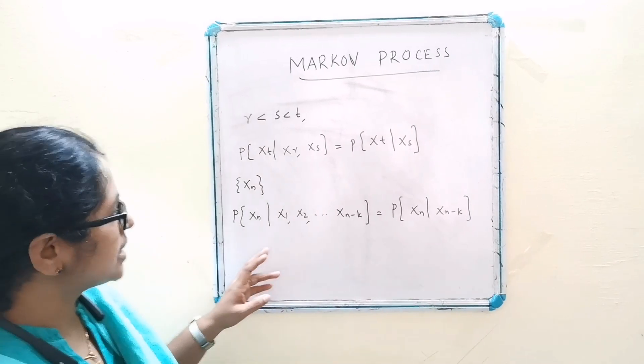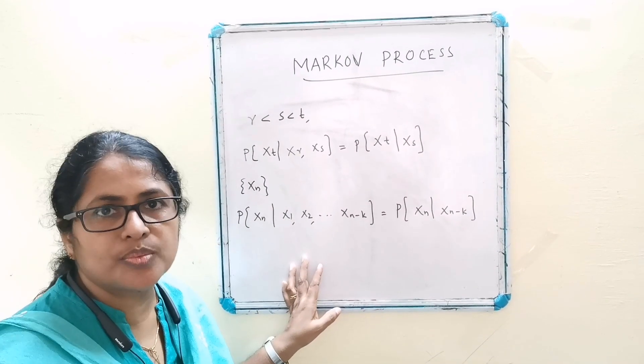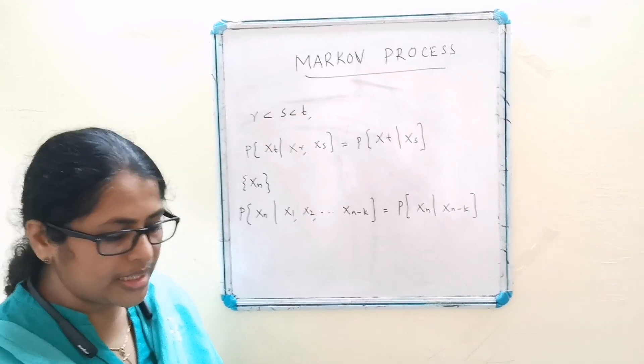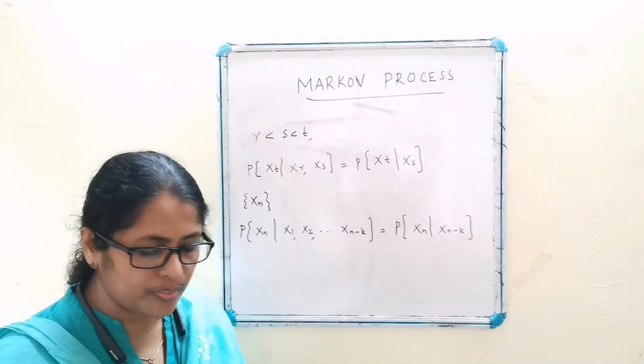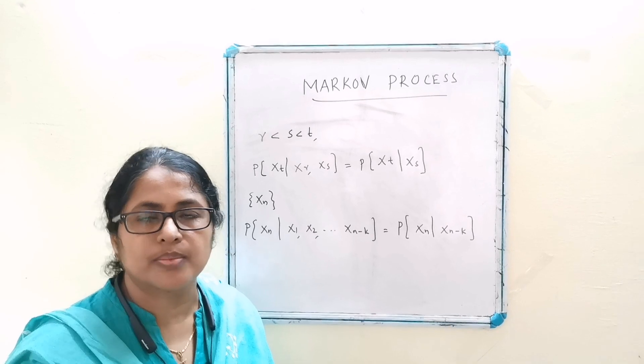When the order is not specified, it is assumed that k is equal to 1. A stochastic process satisfying Markovian property is known as Markov process.